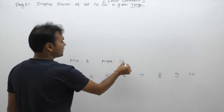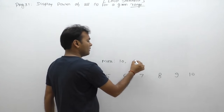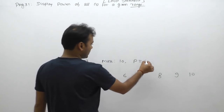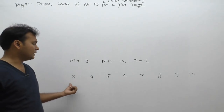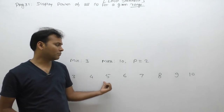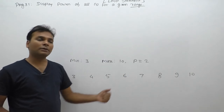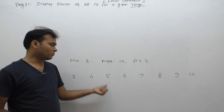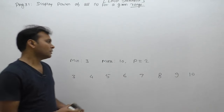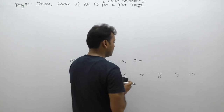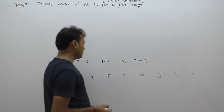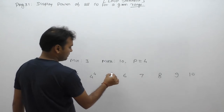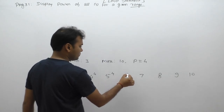Next, you will enter the required value of power — which power is required. We refer to it as P. If P is entered, then we compute: 3 to the power P, 4 to the power P, 5 to the power P, 6 to the power P. For example, if P is 2 then we compute squares. Suppose P is 4, then we compute: 3 to the power 4, 4 to the power 4, 5 to the power 4, 6 to the power 4, and so on.